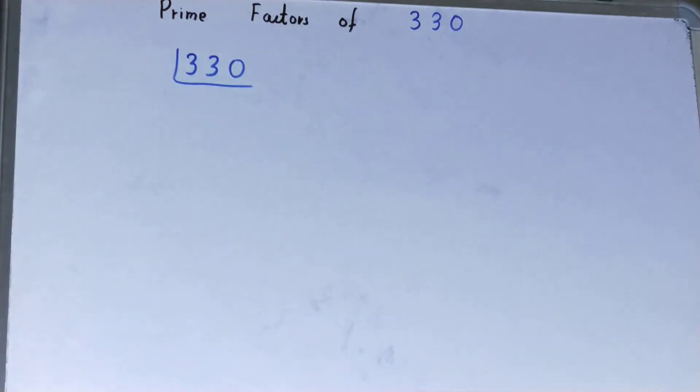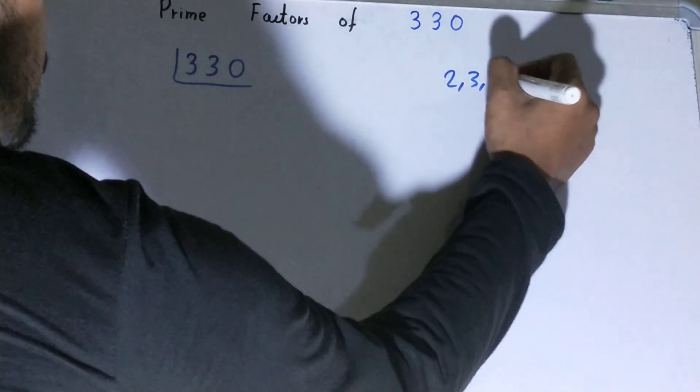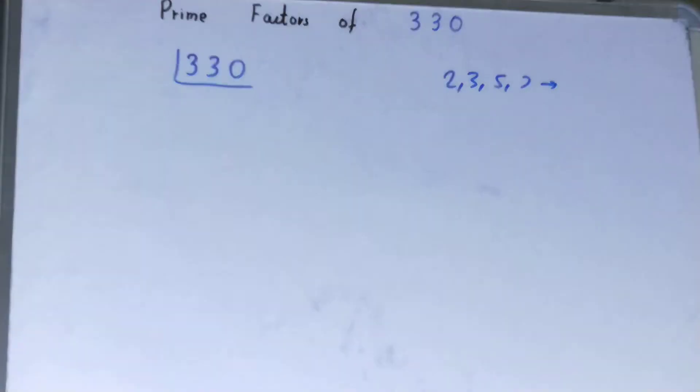Before solving this, you must have an idea about what prime numbers are. Prime numbers are numbers that are divisible by one and themselves only, like 2, 3, 5, 7, and so on.